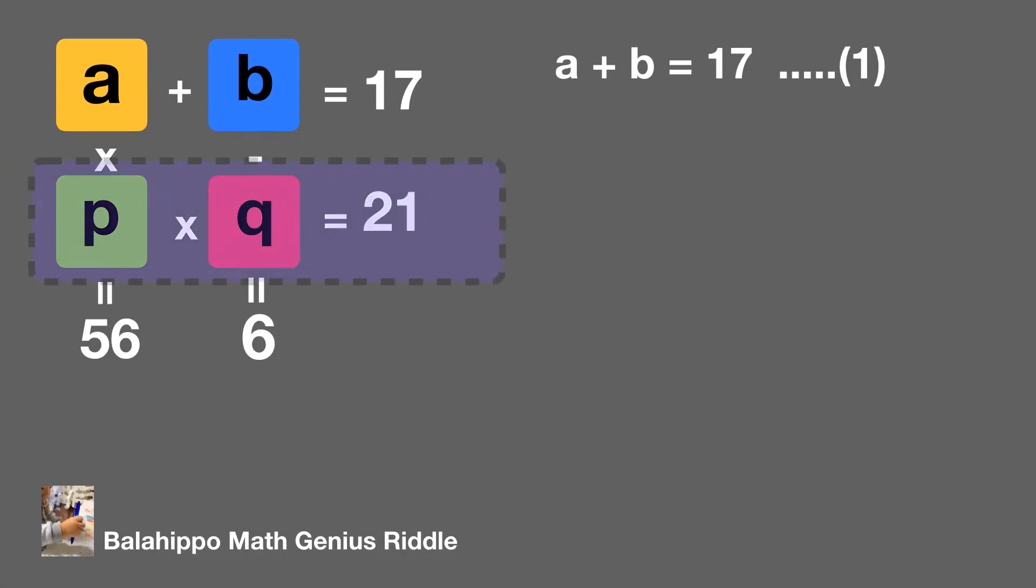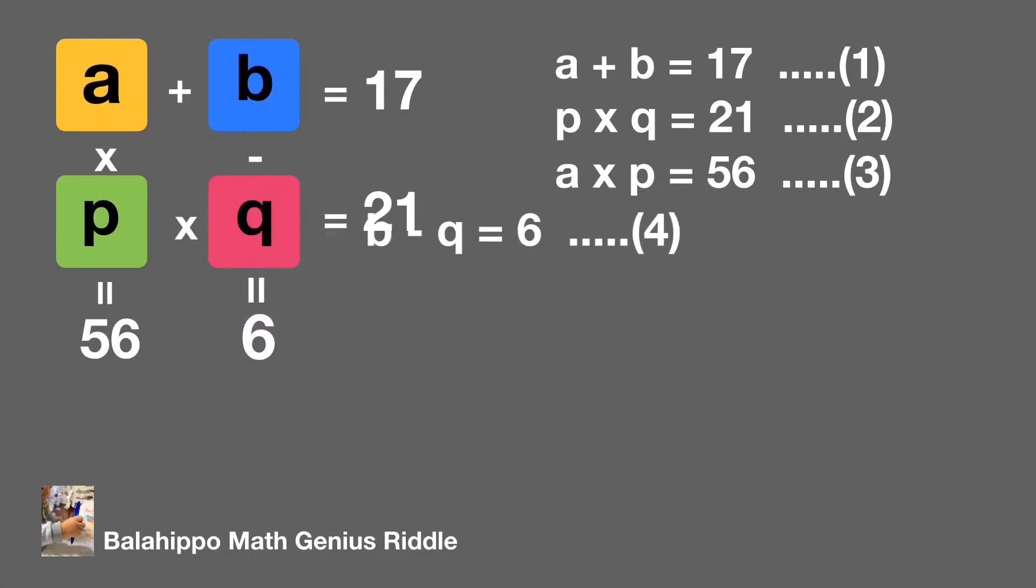The second horizontal equation says P times Q equal to 21, which is equation 2. The first vertical equation says A times P equal to 56, which is equation 3. The second vertical equation says B minus Q equal to 6, which is equation 4.